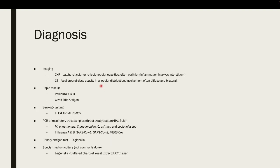For diagnosis, you need a high index of suspicion. The chest X-ray sometimes shows patchy reticular or reticular nodular opacity — opacity means white spots — often perihilar, and sometimes interstitial opacity. If the patient undergoes CT thorax, you may find focal ground-glass opacity in lobular distribution, and often this involvement is bilateral and diffuse, involving both lungs.